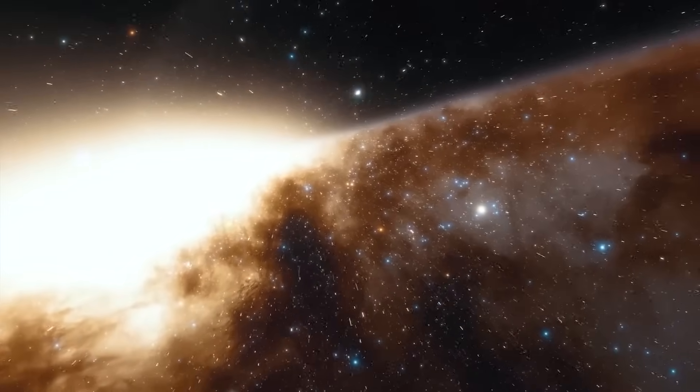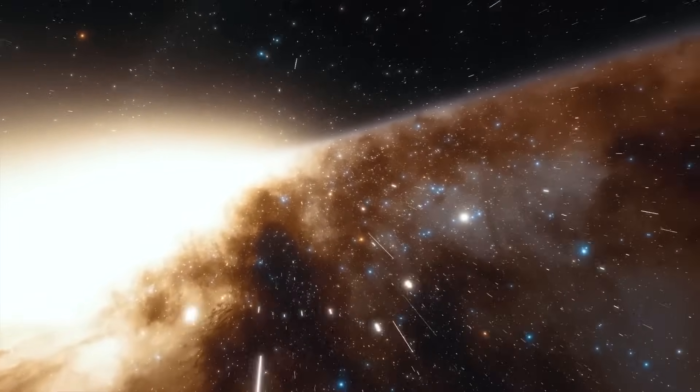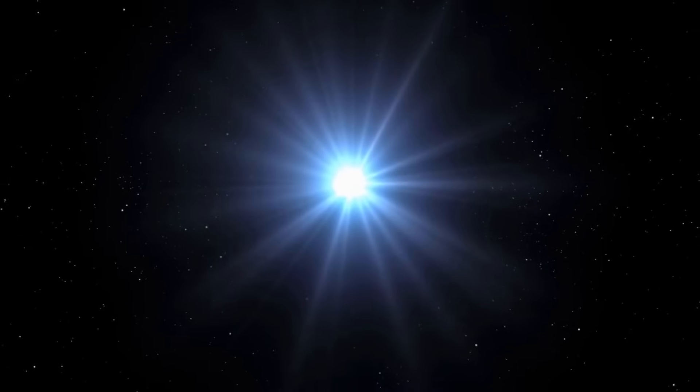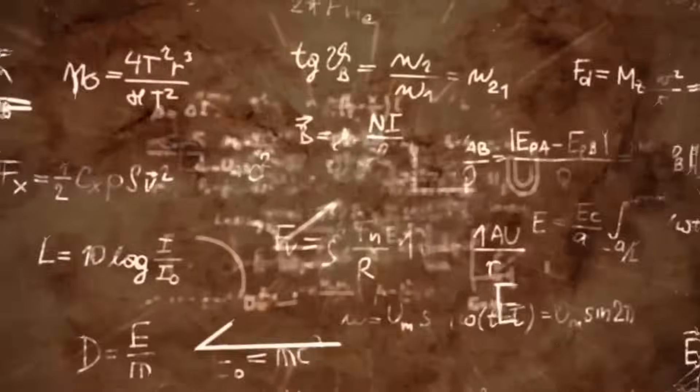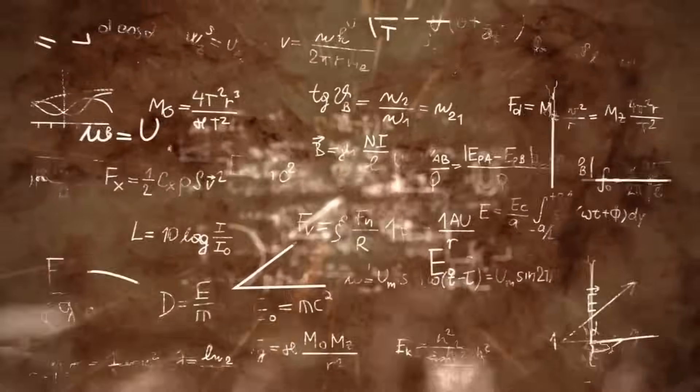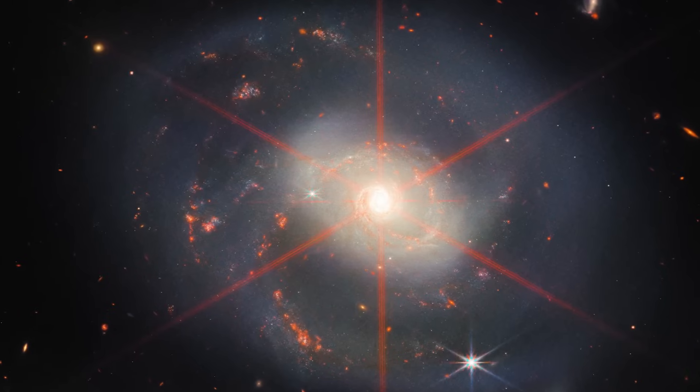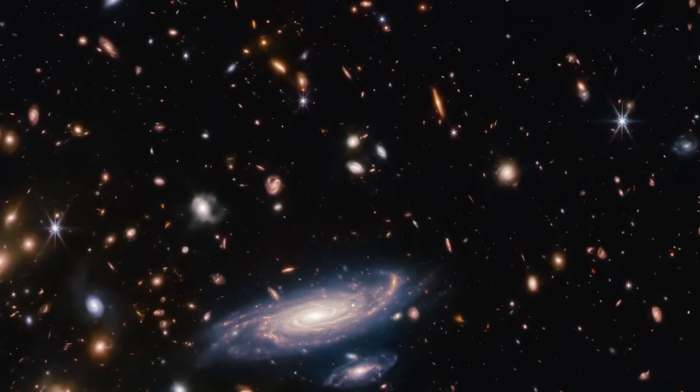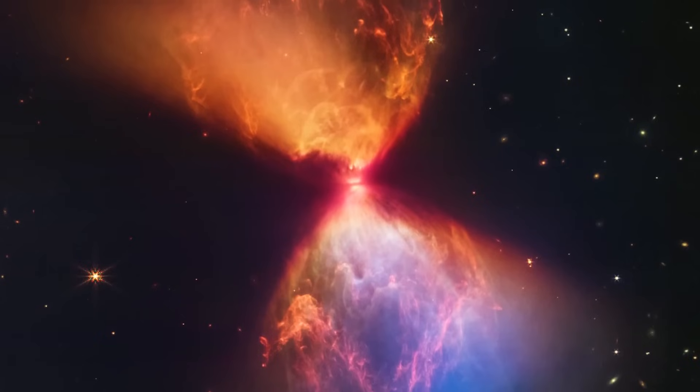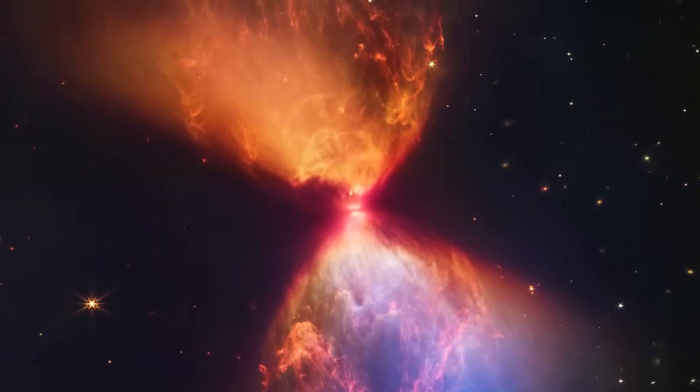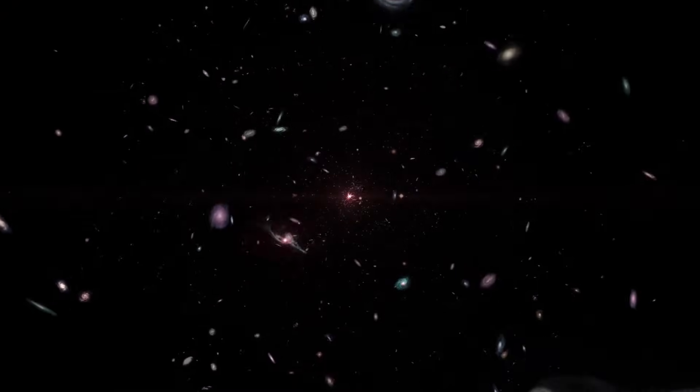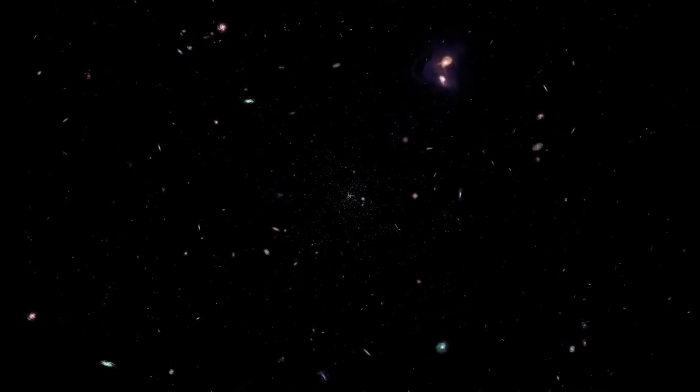Moreover, the smoothness of these galaxies is totally unexpected. According to the Big Bang theory, galaxies should show irregularities and variations in their structures due to the dynamics of their formation and evolution. However, the images reveal unusually smooth galaxies without the level of complexity and roughness that one would normally expect to see in galaxies of their age. This defies the expected time sequence for the formation and evolution of galaxies within the framework of the Big Bang theory.